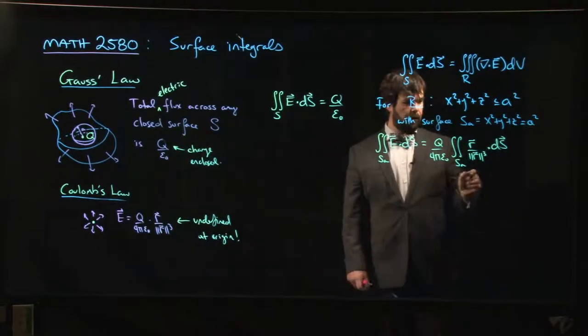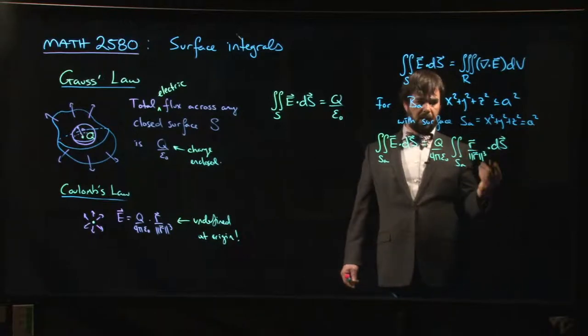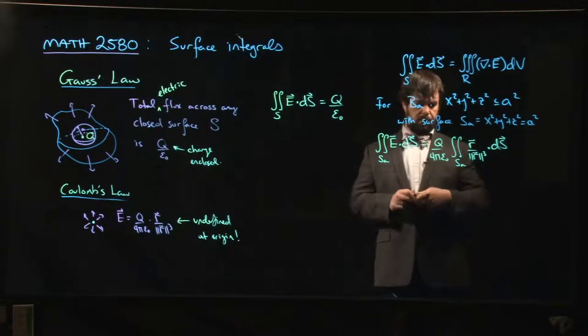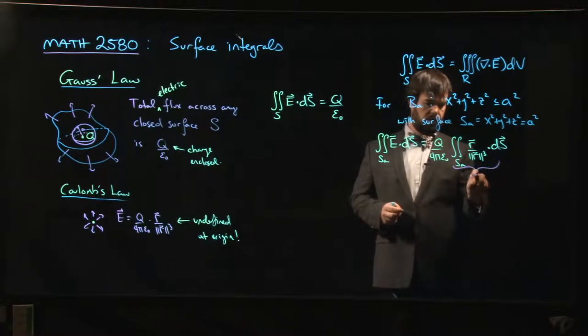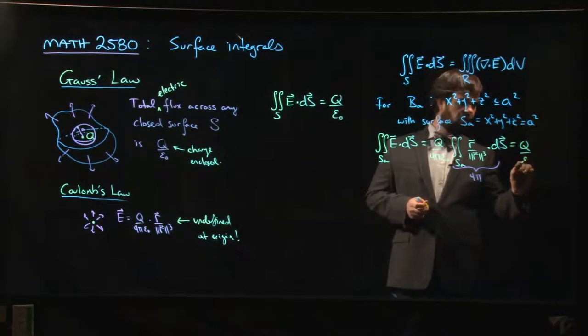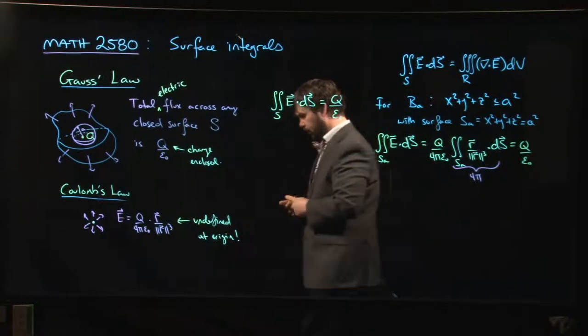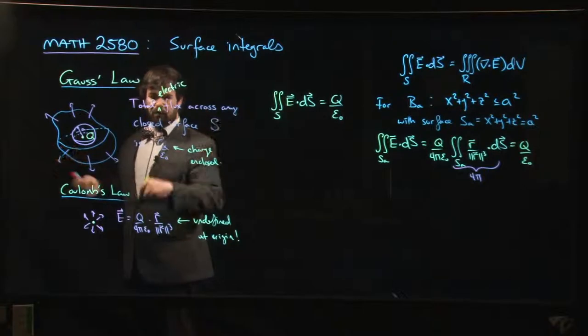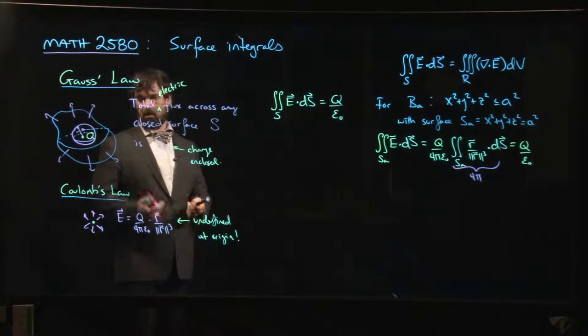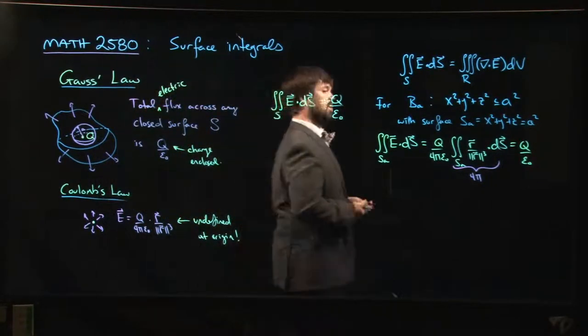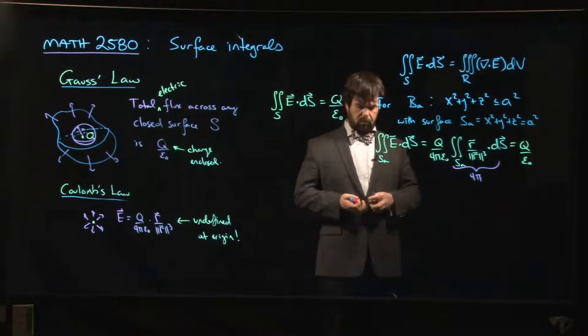We just did this integral in the last video or maybe a couple of videos ago. We worked out that this answer here is just four pi, independent of the radius of the sphere. So it's q over four pi epsilon naught, this whole thing here is four pi, so what we get, well we get what we're supposed to get, q over epsilon naught. So Gauss's law is valid if our surface is a sphere and our charge is a point charge. So we're getting somewhere.